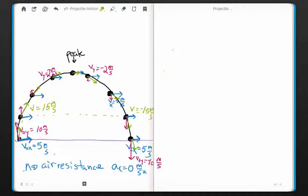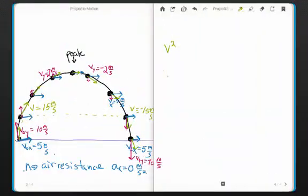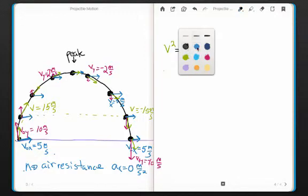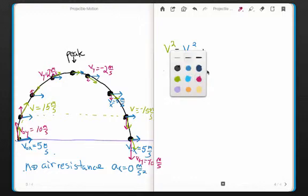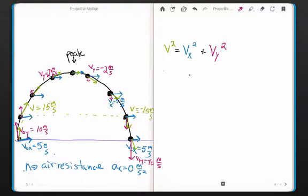Now, in order to calculate the velocity, we have velocity squared is equal to v sub x squared, plus, let me get the black one out, the v sub y squared.